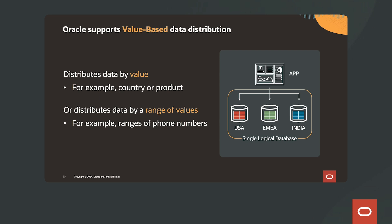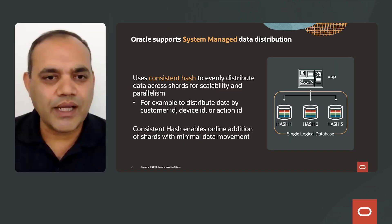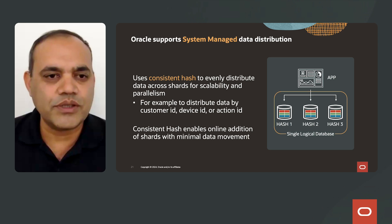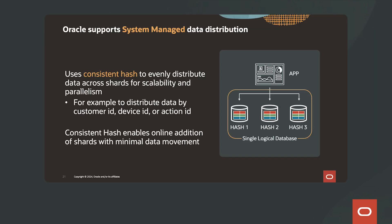Oracle supports value-based data distribution, which distributes data by a value such as a country code or a product ID, or by a range of values such as ranges of phone numbers. Oracle also supports system-managed data distribution, using a consistent hash algorithm to evenly distribute data across shards for scalability and parallelism — for example, distributing by customer ID, device ID, or action ID. Consistent hashing enables online addition of shards with minimal data movement.